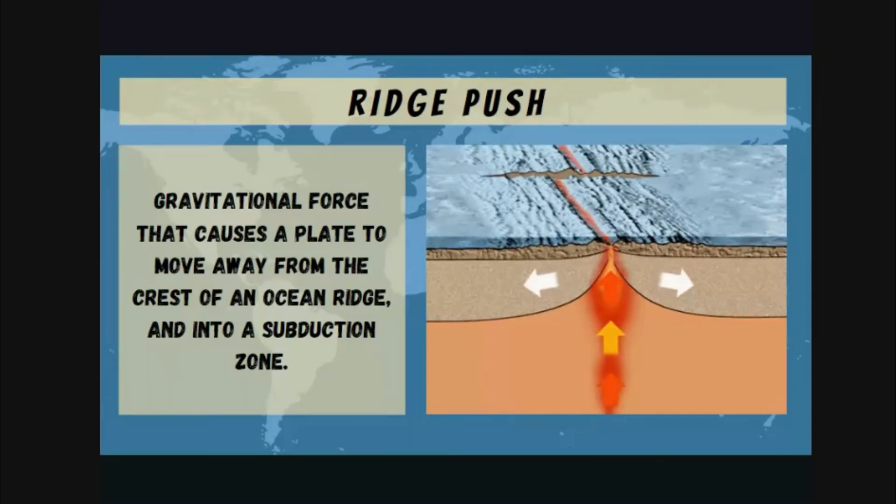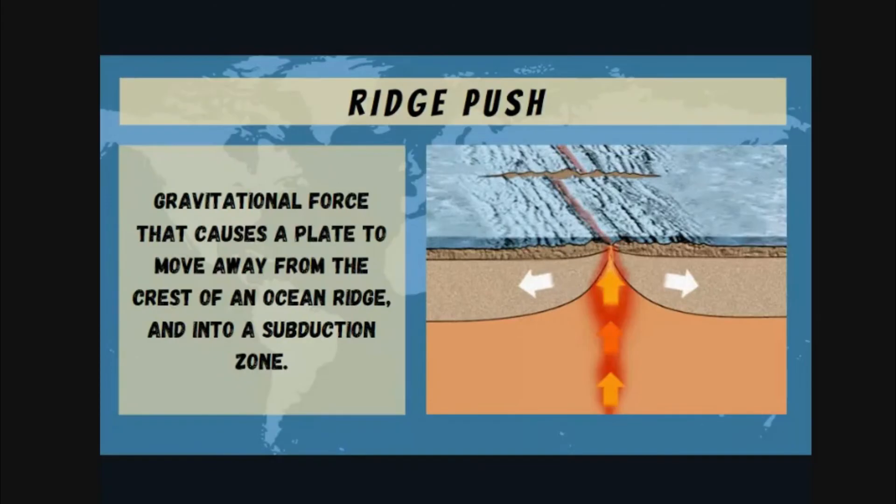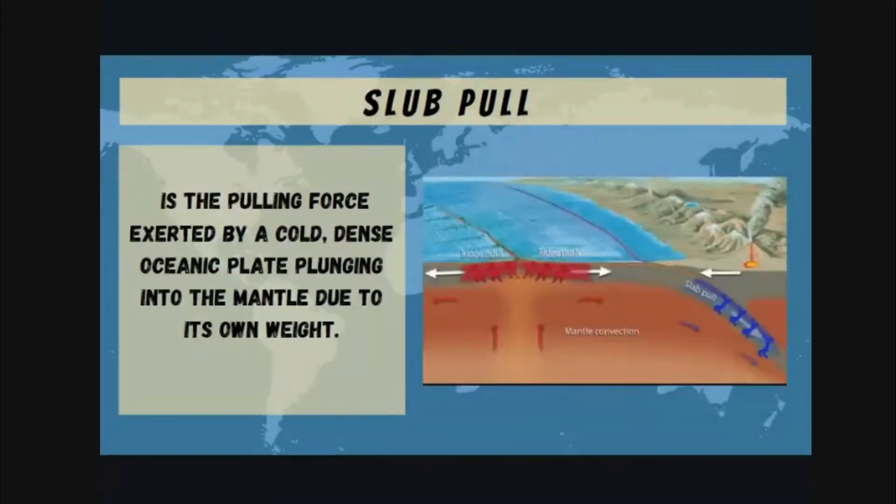What will happen once the older crust is moved towards the subduction zone? What will happen here is what we call slab pull. This is another force created by convection current. It is the pulling force exerted by a cold, dense oceanic plate plunging into the mantle due to its own weight.